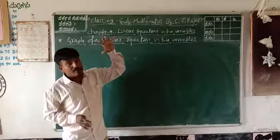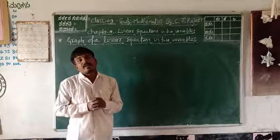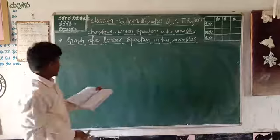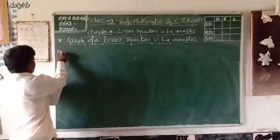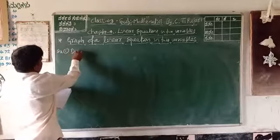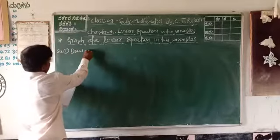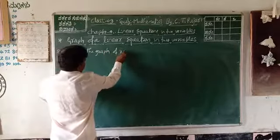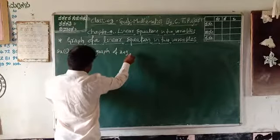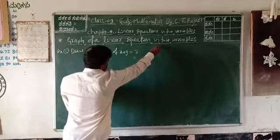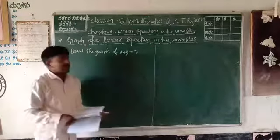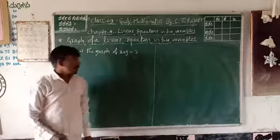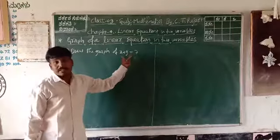You can construct the two variable graph. Let's look at one example. Example number one: Draw the graph of X plus Y is equal to 7. X plus Y equals 7 — you can construct or draw this graph in the Cartesian plane. This is X plus Y equal to 7, which is a linear equation in two variables.